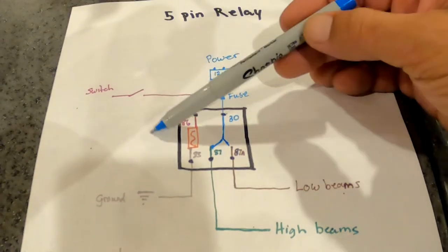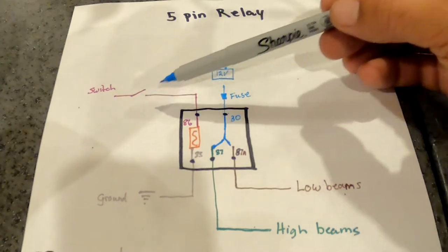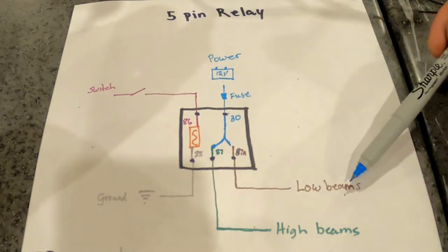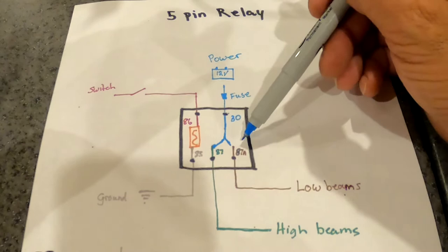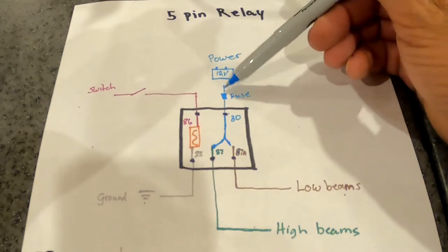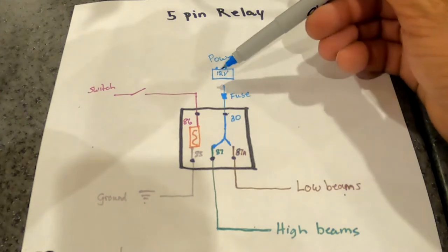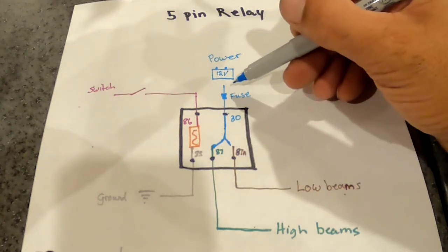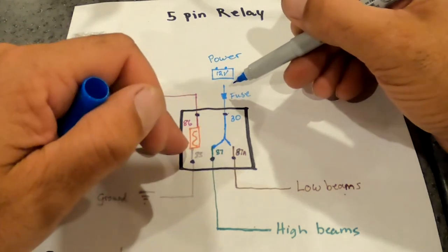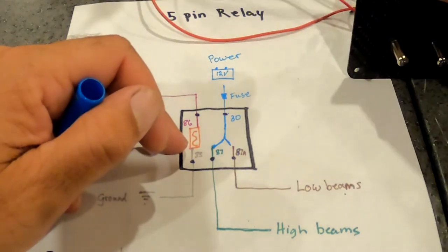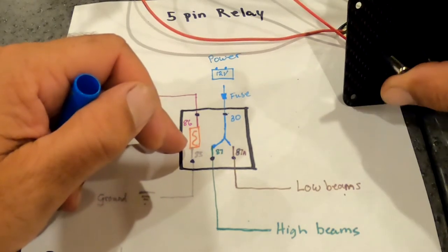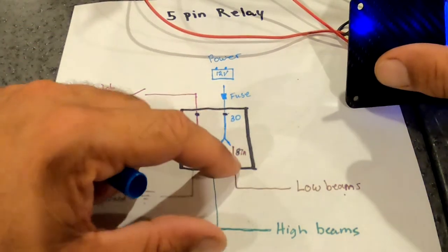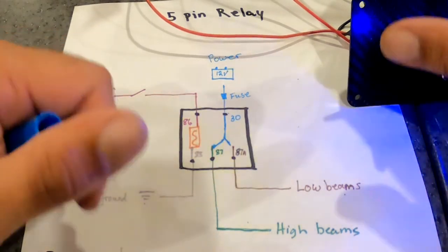So when you turn your high beam switch off, you click this off. This switch flips back over to 87A, and your low beams come back on. 87A is always hot, from the time you turn the car on to the time you turn the car off, when you turn that switch on. So when you switch all this, when I turn this switch on, this activates my headlights, which activates pin 87A for my low beams.